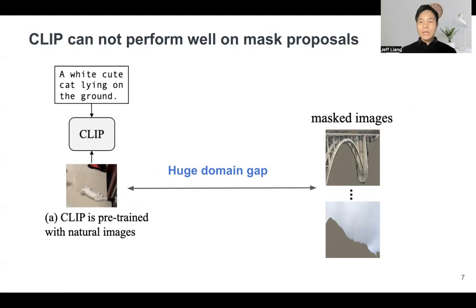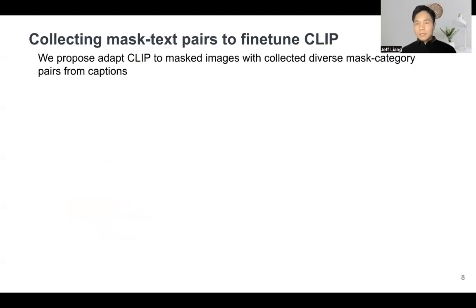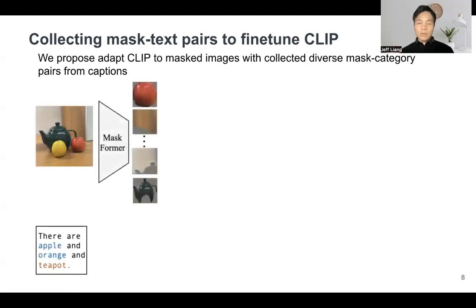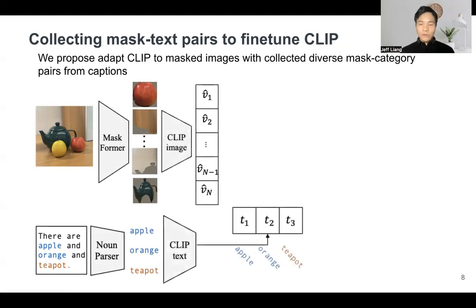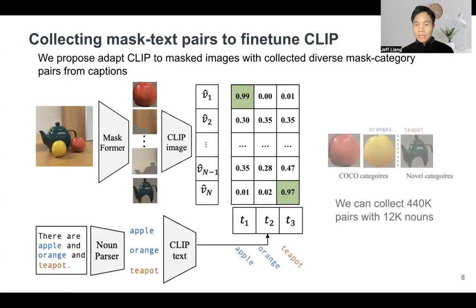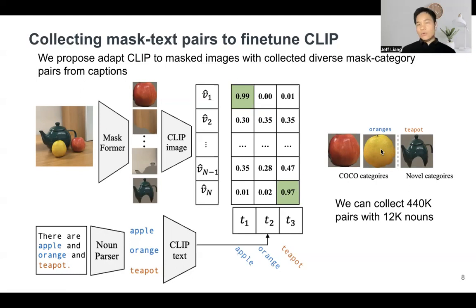The reason is that CLIP is pre-trained with natural images. However, our mask proposals are quite different from natural images — there are many blank pixels and the resolutions are different, so CLIP cannot perform well on them. So how can we solve this? We want to fine-tune our CLIP. The challenge is that we don't have mask-category pairs to fine-tune CLIP. So in this paper, we propose to collect these kinds of datasets from captions. Given an image and its corresponding caption, we put the image into the proposal generator to get mask proposals, extract nouns from the caption, and use an off-the-shelf CLIP to match the proposals and the nouns. By doing this, we can collect novel categories like teapot that are not in COCO.